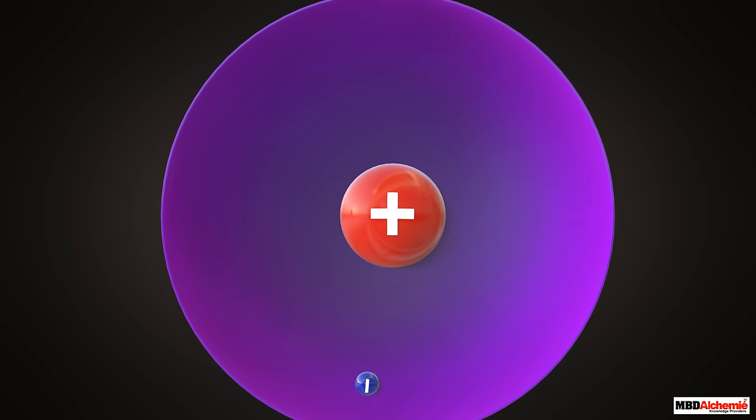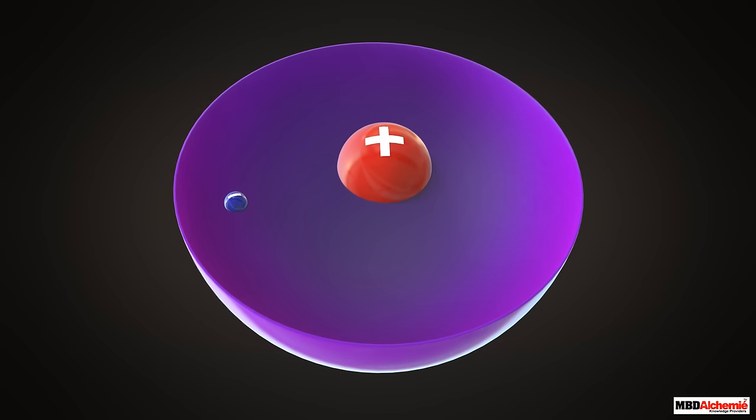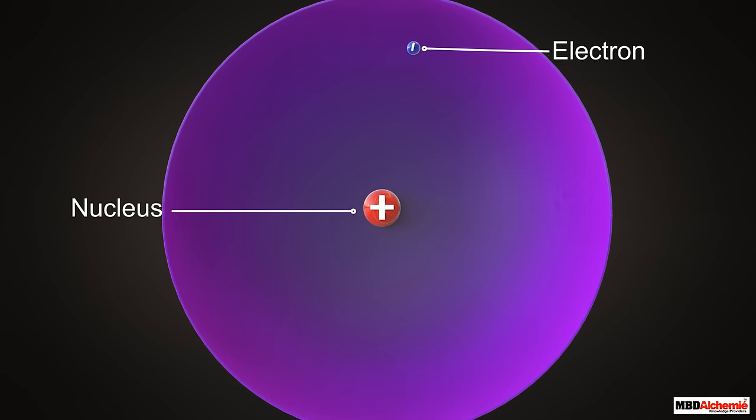This model was also known as planetary model, as the nucleus of the atom can be compared to a miniature sun and electrons revolving around the nucleus can be compared to the planets revolving around the sun. But this model did not get much acceptance as it said that the electron keeps revolving around the nucleus.